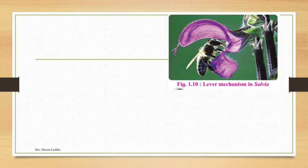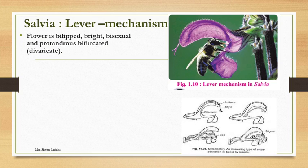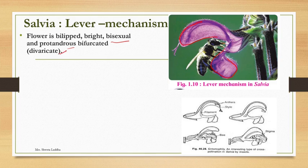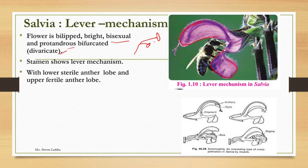The second example is entomophilous adaptation in Salvia, which shows a lever mechanism. The flower is bilipped — it has two lips — and is a bisexual flower, but it is protandrous: the androecium matures first and gynoecium matures later. The anther is bifurcated or divaricate: the connective has two branches — an upper fertile lobe and a lower sterile lobe — and it acts as a lever mechanism. When an insect enters the flower and presses the lower sterile lobe, the upper fertile lobe deposits pollen grains on the body of the insect. Since the gynoecium is not yet matured, self-pollination is avoided.